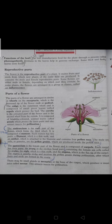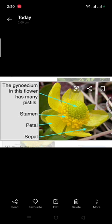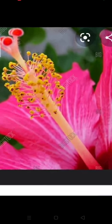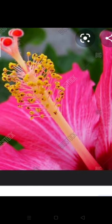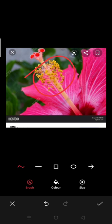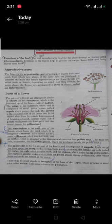The gynoecium is the female part of the flower and is composed of carpels. If you have ever seen a carpel in a hibiscus flower, this is the carpel, and these are pollen grains. The yellow parts are the pollen grains. This is the carpel, and these are anthers.